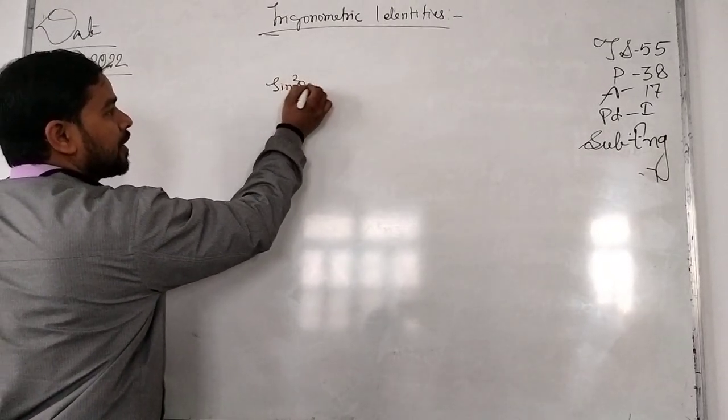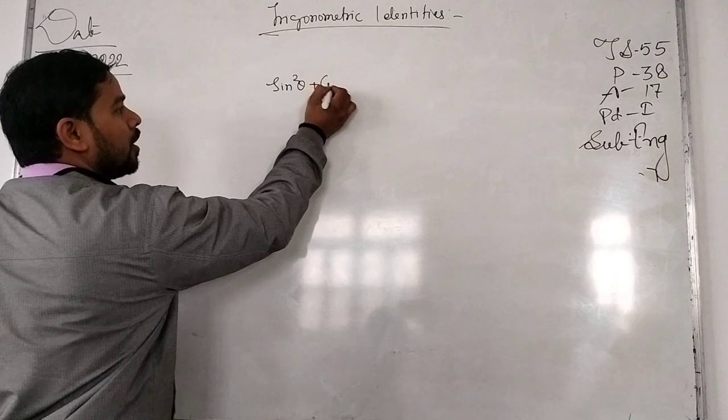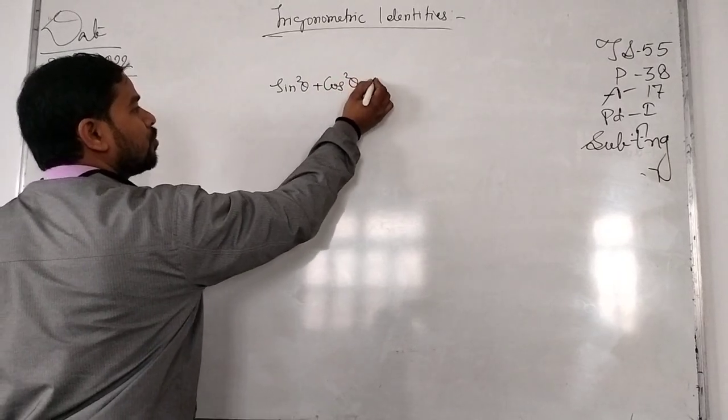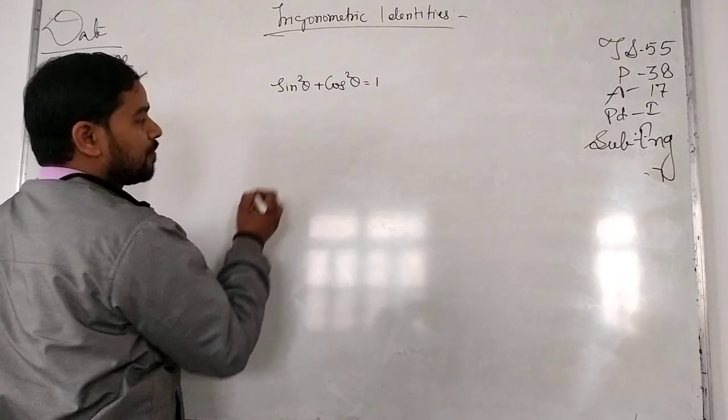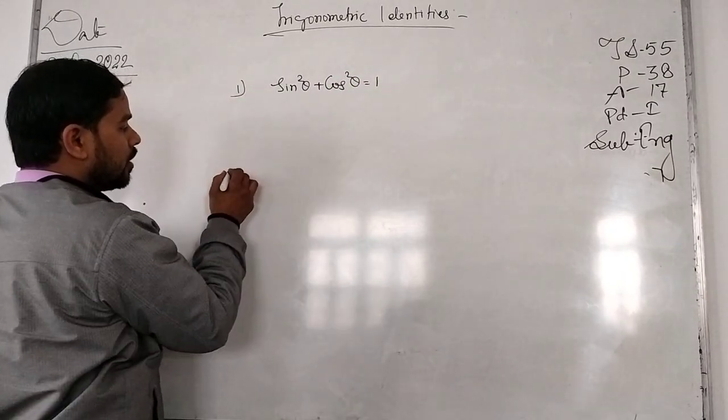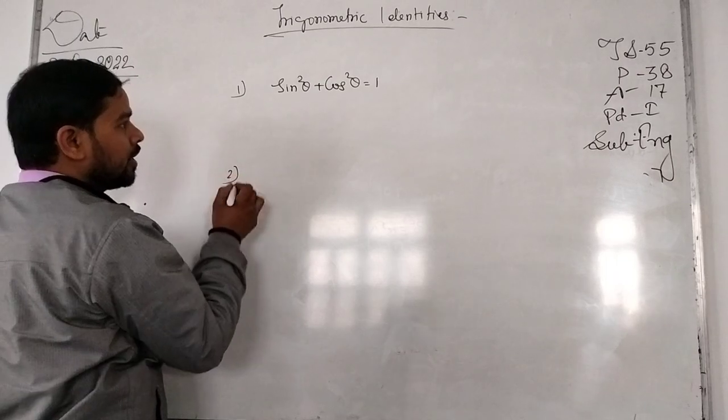Sin squared theta plus cos squared theta equal to 1. This is your first Pythagorean Identity.